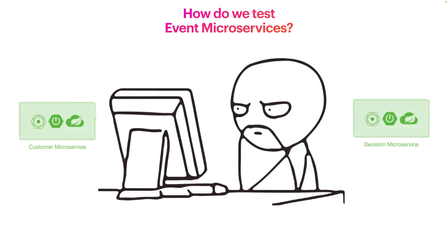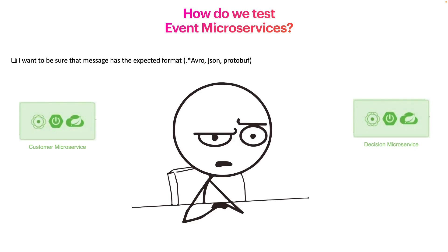The question is, how do we test our Spring Boot event-driven microservice? Of course, there are different approaches that one can take, but as professionals, we should choose the more mature solution. First, let's take a look at our problems. The first thing is that we want to be sure that the message has the expected format — for example, Avro, JSON, or Protocol Buffers. We could think about using the schema registry, but it just covers the schema or message format and structure.